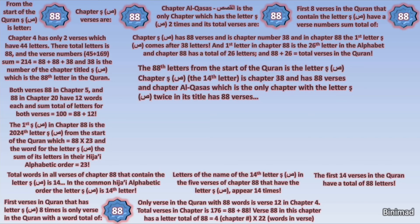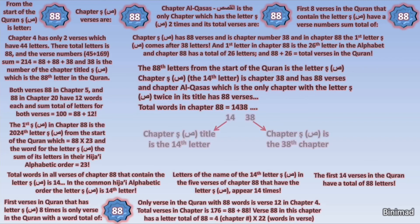When we count all the words in chapter Al-Qasas, they are exactly 1438. Can you see it? The first half of the number is 14 and the second half is 38. Chapter Saad is chapter 38, and its title is simply the letter Saad, which is the 14th letter of the common Hijai alphabetic order.